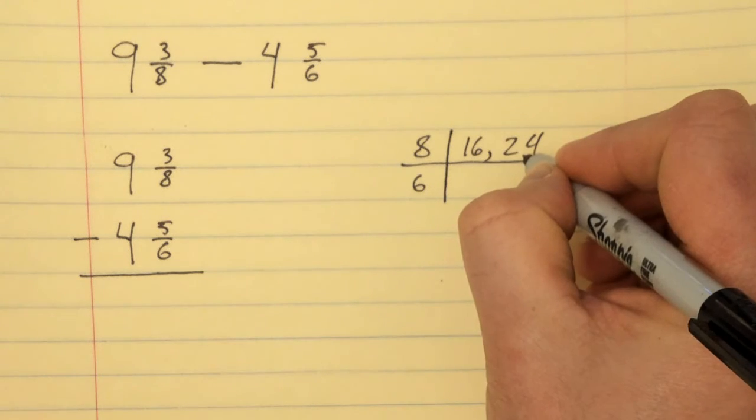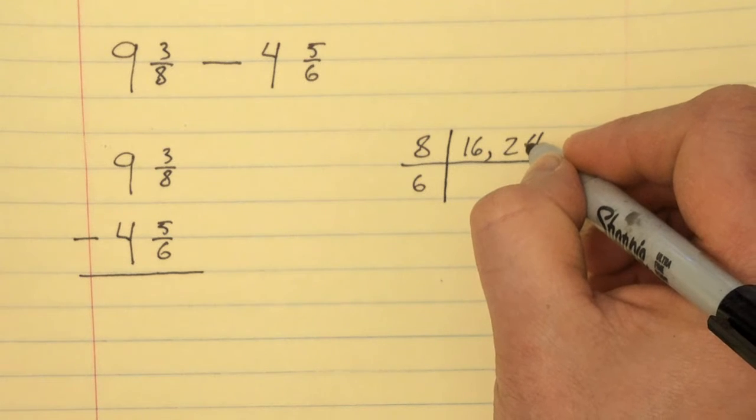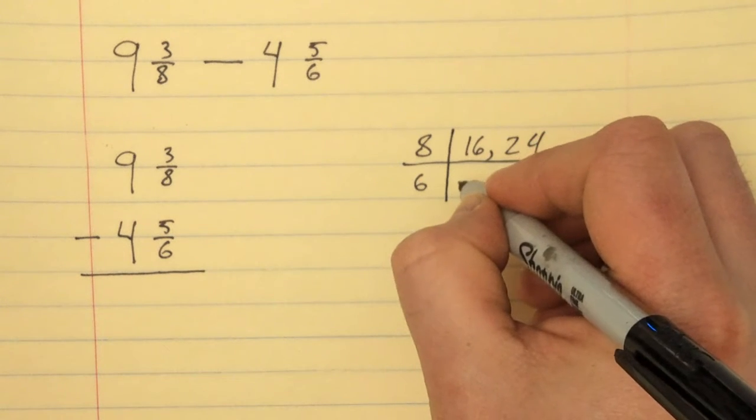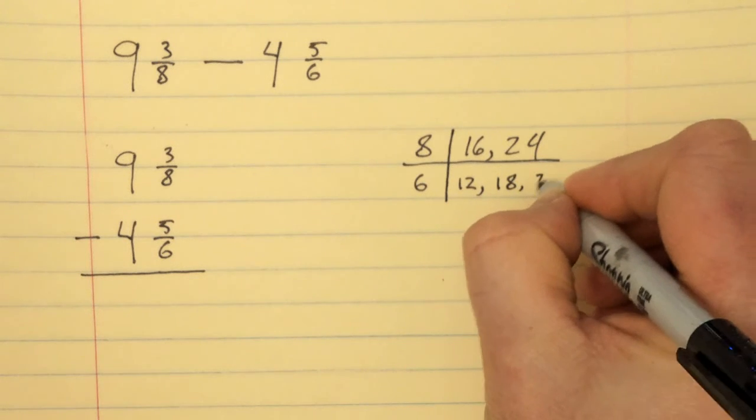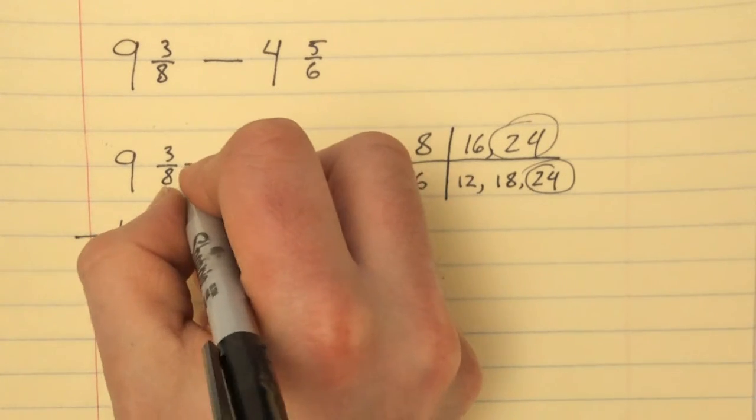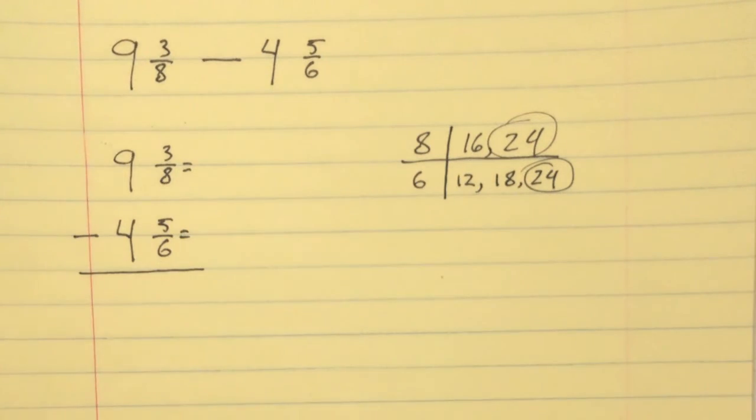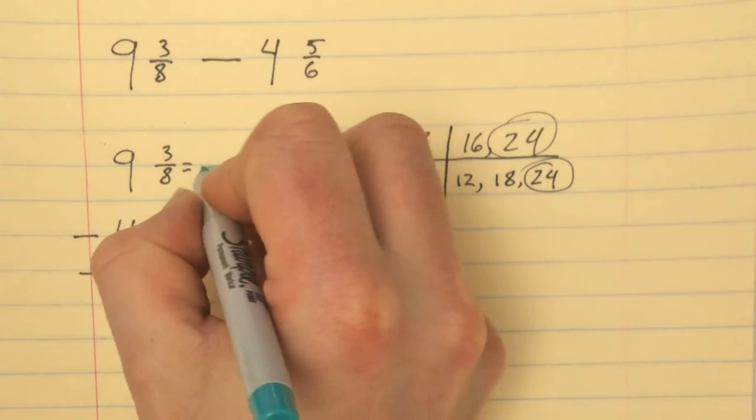So six, twelve, eighteen, twenty-four, just to prove it. All right, right over here, say okay, well, 3/8 equals something over 24, and 5/6 equals something over 24.